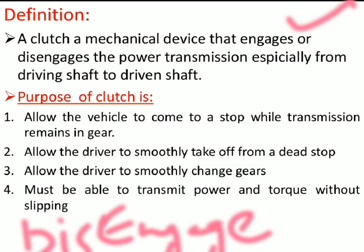What are the purposes of Clutch? The first purpose is to allow the vehicle to come to a stop while the transmission remains in gear. That means when the vehicle is in second, third, or fourth gear, the Clutch is used to help slow down or completely stop the vehicle.